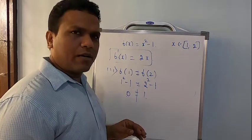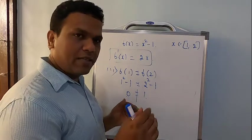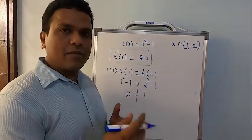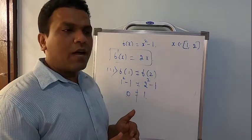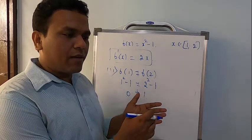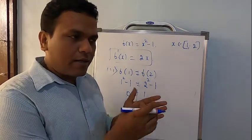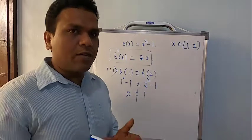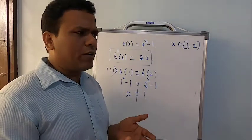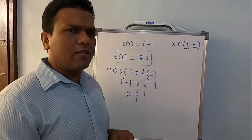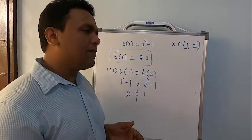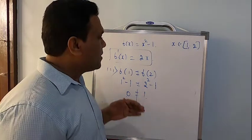Don't proceed further if it fails at any stage. Remember the previous two problems — they fail at continuity and differentiability itself, so there's no need to solve for f(a) equal to f(b). Still, I did it — it's okay. Here, f(a) is not equal to f(b), so just simply give a conclusion: Rolle's theorem is not satisfied.